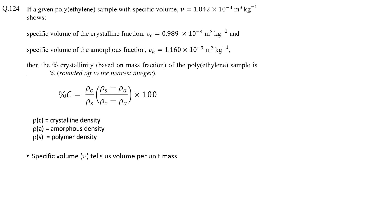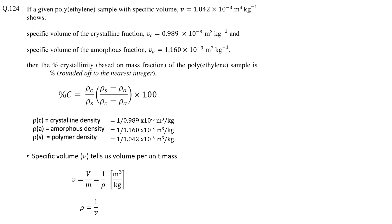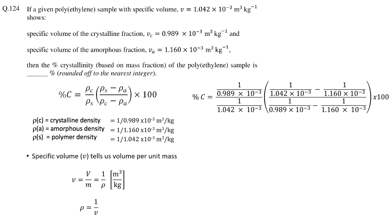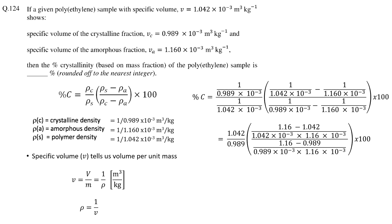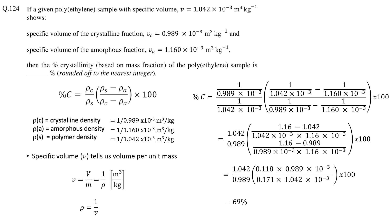If we see the relationship between specific volume and density, we will find that density is inversely proportional to specific volume. So we can calculate the density of the sample and amorphous and crystalline fractions by taking the inverse of their respective specific volume. Now we can put the values of densities in the equation and calculate percentage crystallinity. After simplification, the percentage crystallinity of the sample is 69 percent.